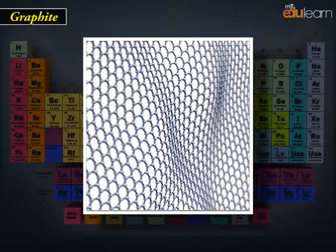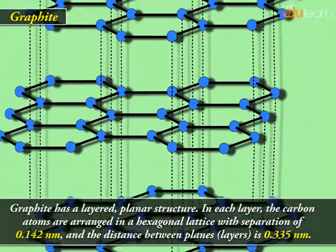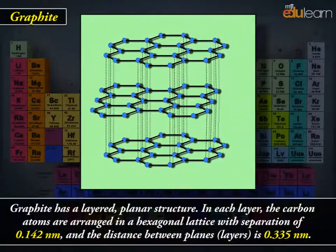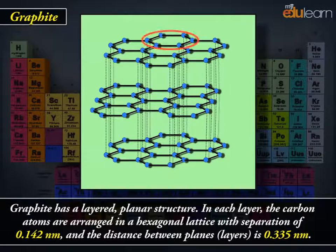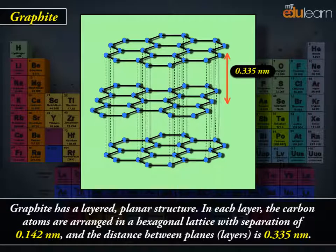Graphite has a layered planar structure. In each layer, the carbon atoms are arranged in a hexagonal lattice with separation of 0.142 nm, and the distance between planes, or layers, is 0.335 nm.